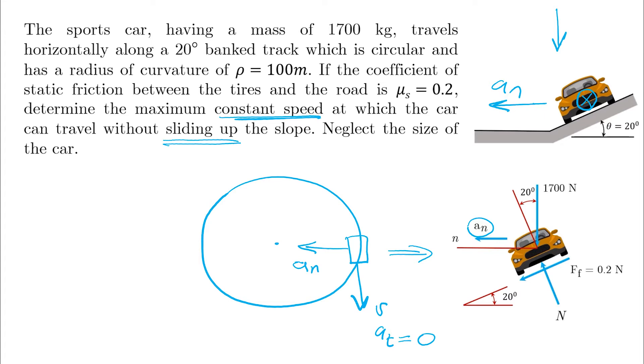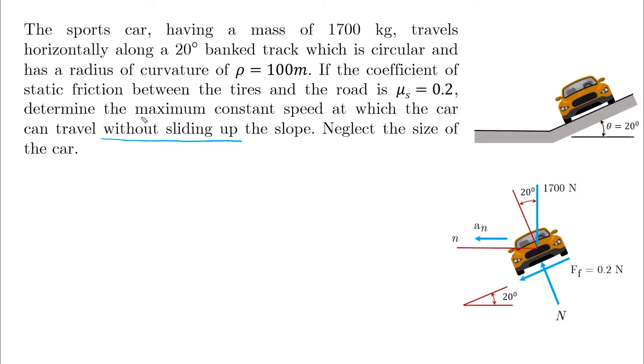This is the weight vertically down. This is 20 degrees which is the angle of the plane. This is the normal. And the question is saying without sliding up, so find the maximum speed such that the car is about to slide up. And this means that the tires have reached their maximum static friction of mu s times N. And by knowing the direction of the acceleration, which is the normal which is left horizontal, we can solve this problem.